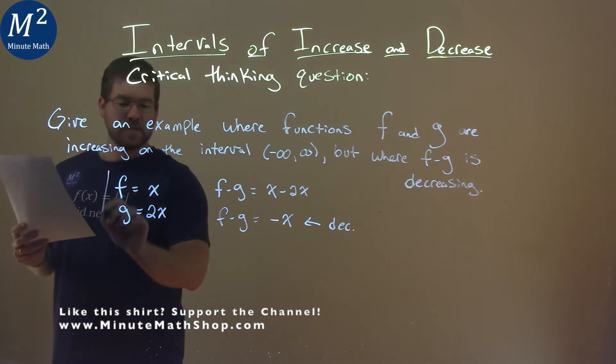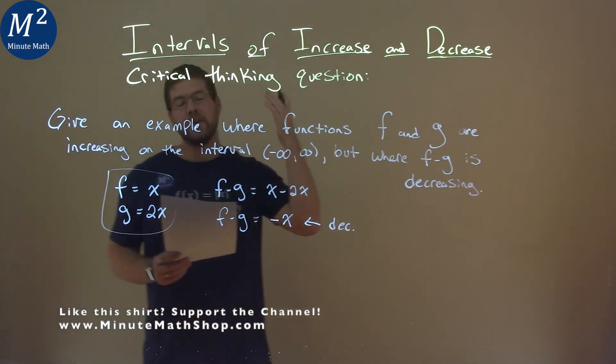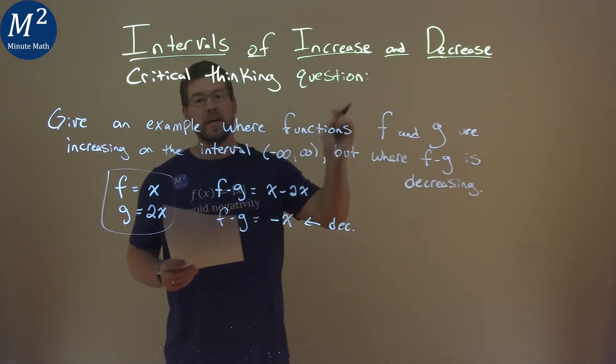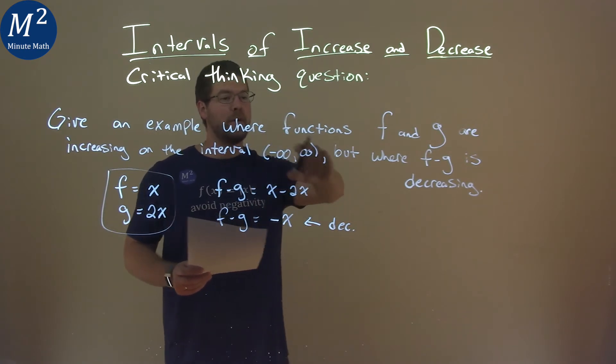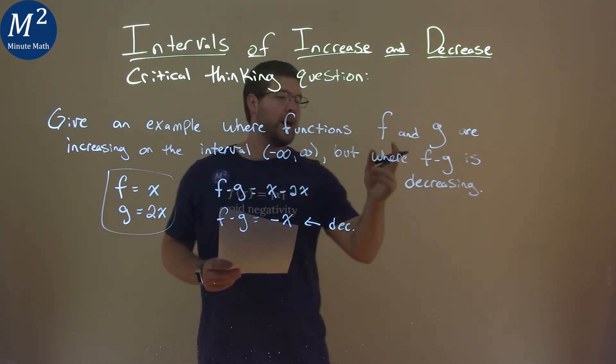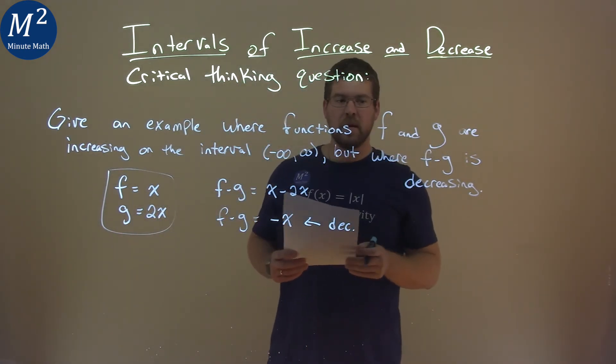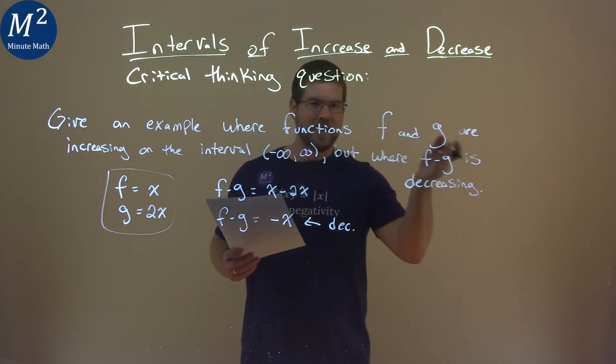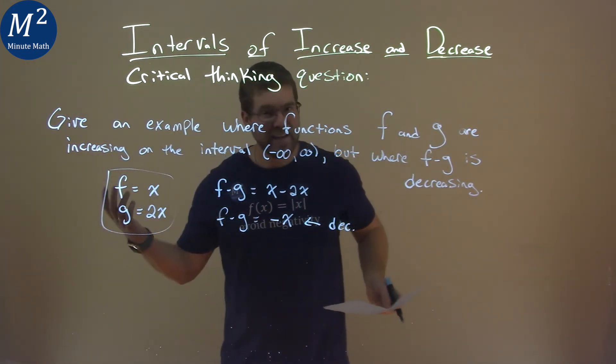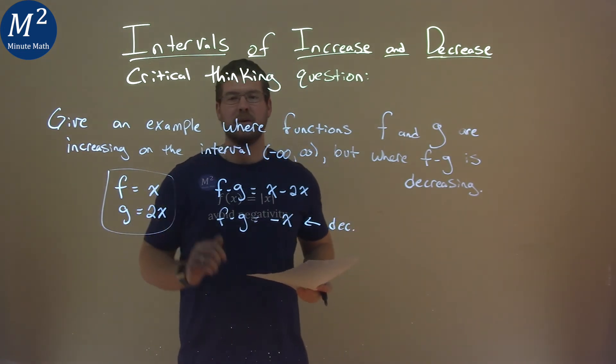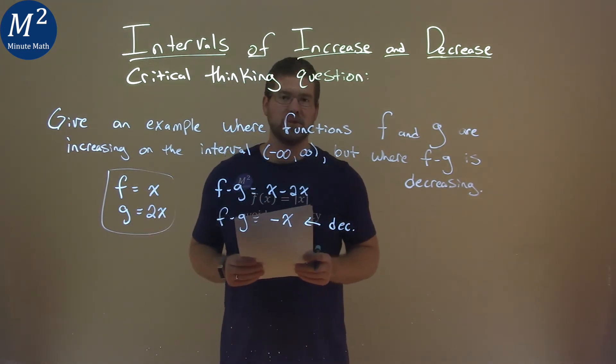So, two examples of functions here that satisfy this critical thinking question where functions f and g are increasing on our interval from negative infinity to positive infinity, but f minus g is decreasing. Again, it can be many, but here's just one of them: f is equal to x and g is equal to 2x.